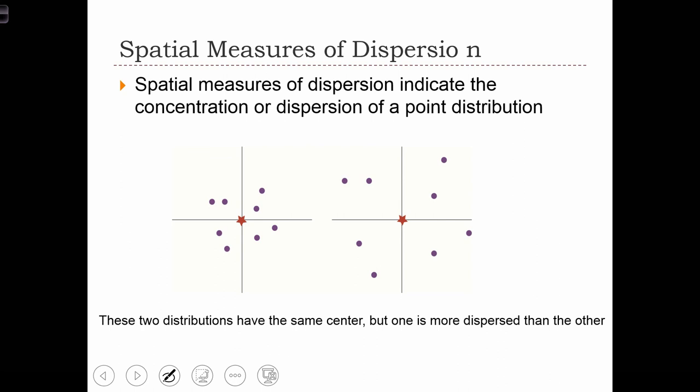Now we're going to cover spatial measures of dispersion. Just like the aspatial measures of dispersion - range, variance, and standard deviation - we can calculate or create spatial analogs of these measures.